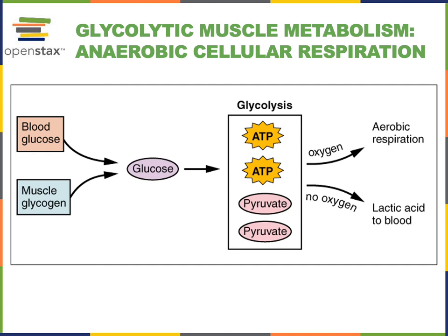Aerobic cellular respiration provides another pathway for the generation of ATP. Glucose enters glycolysis, and as glucose is broken down to produce pyruvate, or pyruvic acid, as a product, two ATP molecules are generated. The pyruvate molecule can either enter aerobic respiration to generate more ATP if oxygen is available, or if there is not sufficient oxygen, the pyruvate will be converted to lactic acid that can be transported out into the blood.